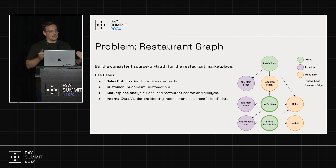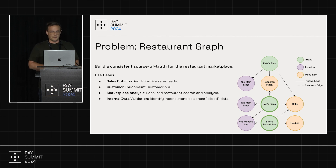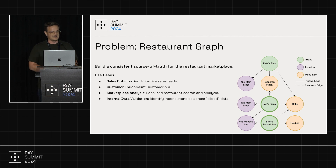At a high level, we are tasked with building a consistent source of truth for the restaurant marketplace. I want to know all the restaurants in the world — who's our customer, who's not, what product they should be using. This goes into sales optimization, customer enrichment, marketplace analysis, where should we be putting stuff? We do a lot of spatial data analysis and also some internal data validation. When you have siloed data, sometimes you find things that don't link between two data sources.